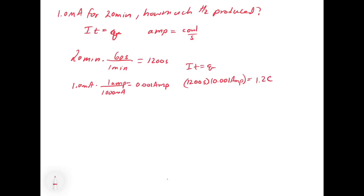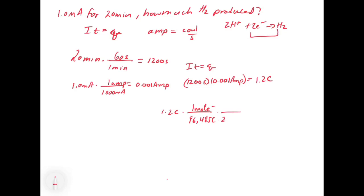Now what do we do with the coulombs? This is where Faraday's constant comes in. We take our 1.2 coulombs and say for every 96,485 coulombs there is one mole of electrons — so we get the number of moles of electrons. Our reaction is 2H⁺ + 2e⁻ → H₂, so for every two moles of electrons there is one mole of H₂ produced. Then we convert to grams: for every one mole of H₂ there are 2.00 grams, giving us 1.2 × 10⁻⁵ grams of H₂ produced.